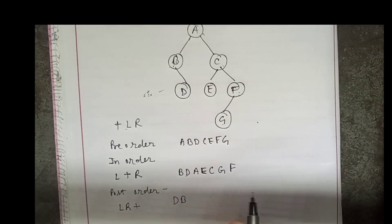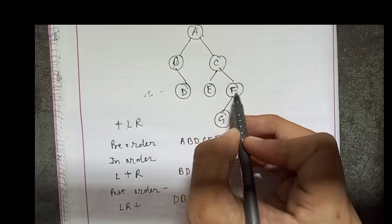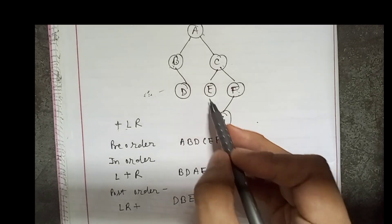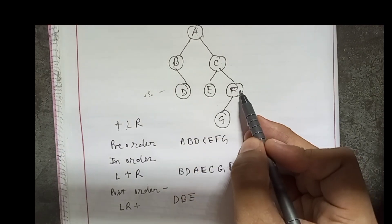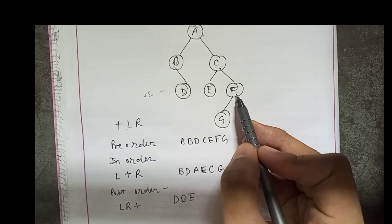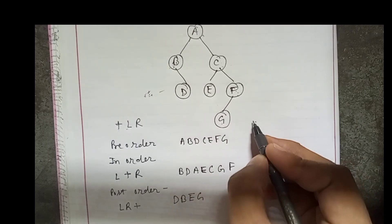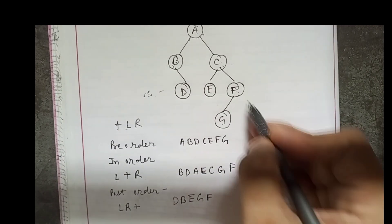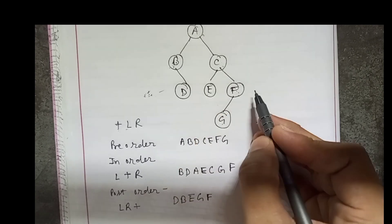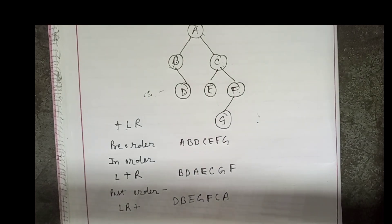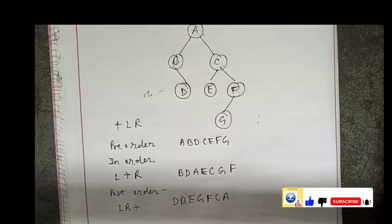Going to the right — that is C — but C has two children, left and right. So we go left first; E has no children, so write E. Then go right — F has a child, so go left: G has nothing, so write G, then root F. Left done, right done, then write root C. Finally write root A. So post-order gives: B, E, G, F, C, A. These are the three traversals — pre-order, in-order, and post-order.